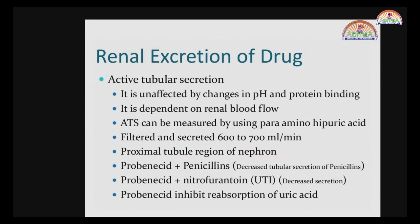Characteristic points about active tubular secretion: it is unaffected by urinary pH changes or protein binding. Usually when urinary pH changes, the extent of drug ionization changes, affecting excretion. However, since active tubular secretion is an energy-dependent process, it is independent of pH or protein binding — no matter how much protein binding or how poor the pH, the drug will be eliminated. Active tubular secretion can be measured using para-aminohippuric acid, which is the only substance physiologically excreted by active tubular secretion.